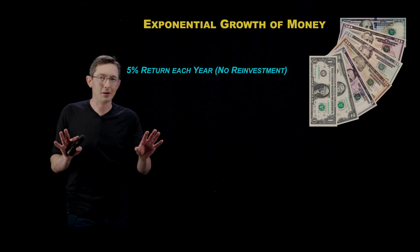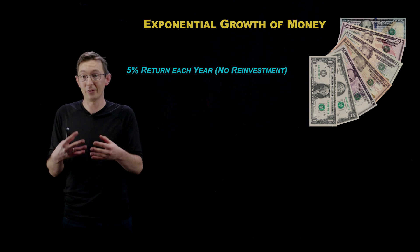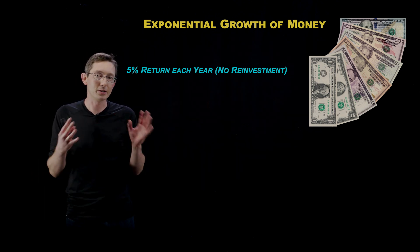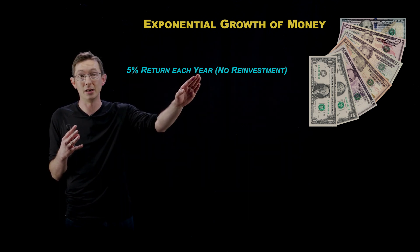So I want to walk through a really simple toy example where we're going to have $100 and we're going to put it in a bank. And we're going to assume that we have a really great bank that gives a 5% return each year.